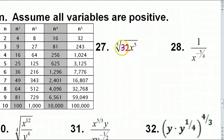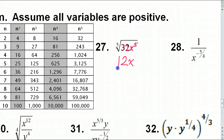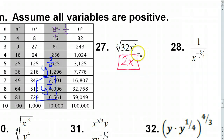The way we simplify variables is we divide the exponent by the root. 5 is divisible by 5, so this can also be simplified. The fifth root of 32 is 2, so 32 becomes 2. And 5 divided by 5 is 1, so that's just X. The answer for number 27 is simply 2X.